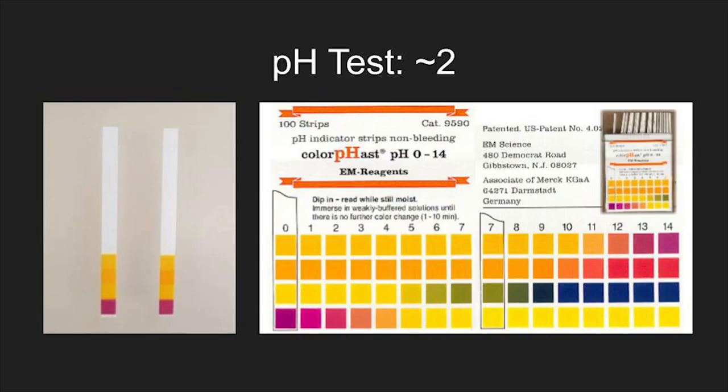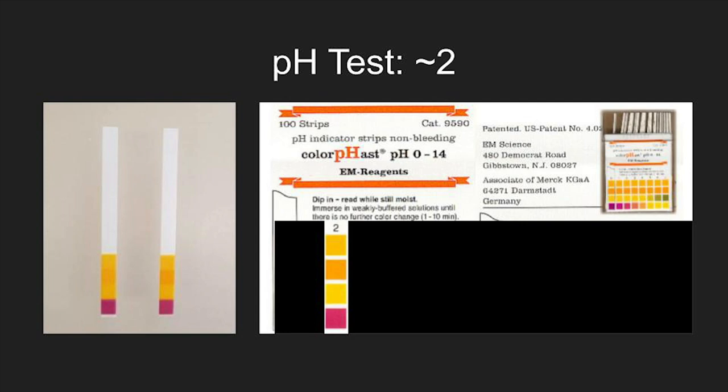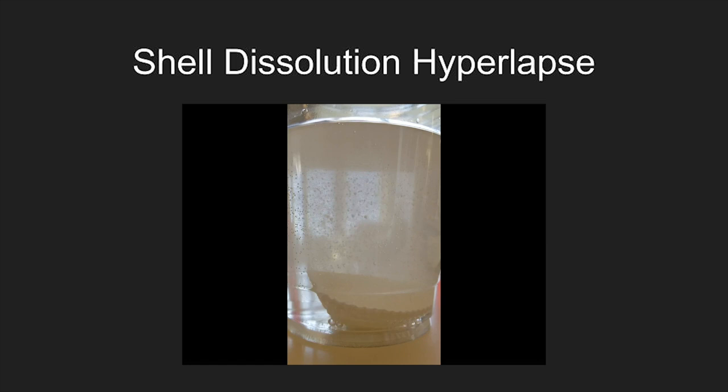The pH that I measured was a pH of 2, as you can see using this pH tester. While doing the experiment, you should see that the seashells are dissolving in the acidic solution, and here I've captured a hyperlapse of this happening.